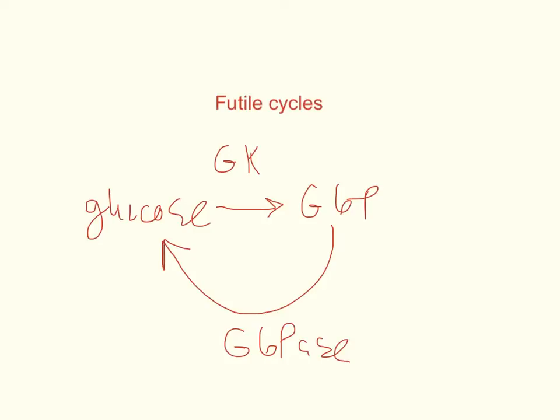In some cases, glucose 6-phosphatase is favored, and glucose is the net product. In other cases, glucokinase is favored, and glucose 6-phosphate is the net product.